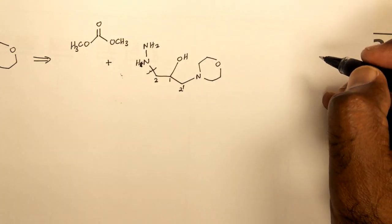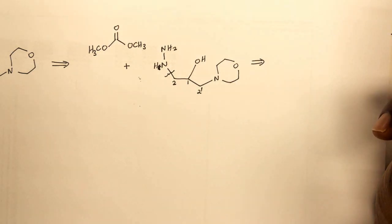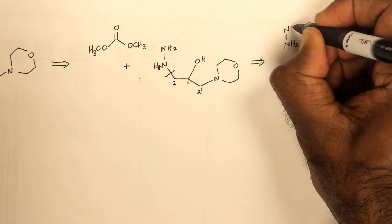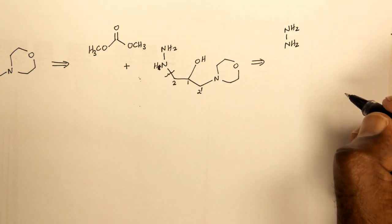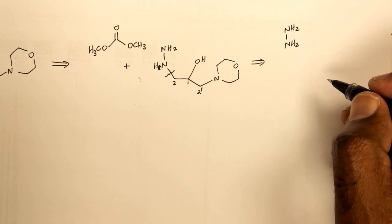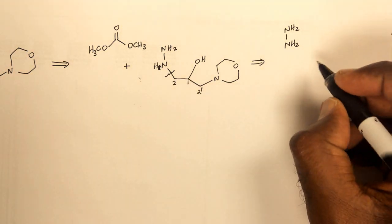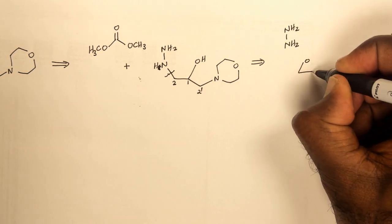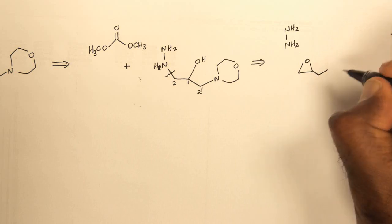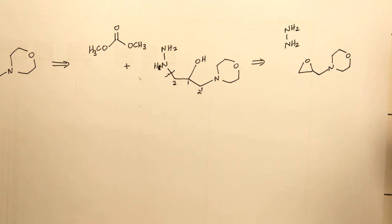Looking at that particular disconnection, we would get hydrazine as one of the synthons or synthetic equivalents. That would leave carbon number 1 and carbon number 2 forming an epoxide. The rest of the molecule can be drawn in with the morpholine structure in it.